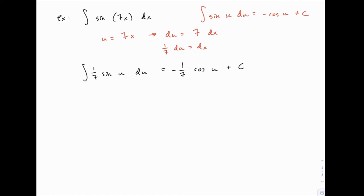And we're almost done. The only remaining step is to replace u back with 7x so that our answer is in the same variable that the question was given. So we'll have negative 1/7 cosine of 7x plus c.